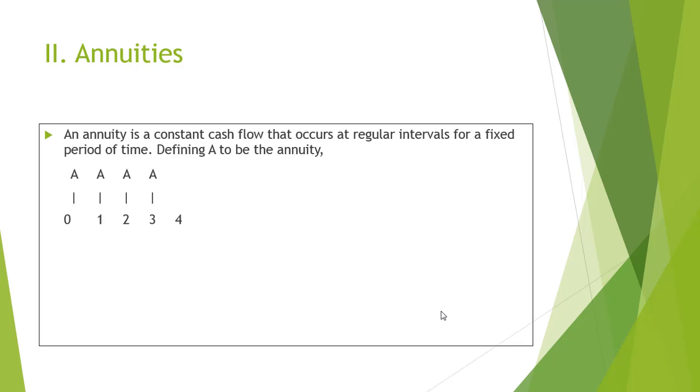The second type of cash flows are annuities. An annuity is a constant cash flow that occurs at regular intervals for a fixed period of time. For instance, if A is an annuity amount in the figure shown, then 0, 1, 2, 3, and 4 would be the constant intervals of time where it would be dissipated.